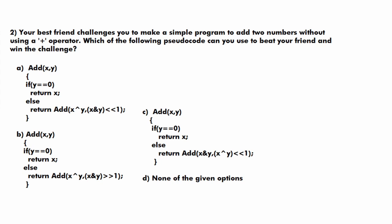Moving to the second question: your best friend challenges you to make a simple program to add two numbers without using a plus operator. Which of the following pseudocode can be used to beat your friend and win the challenge? You are given four options and must identify which function will add two numbers. We will take each function, run it for some input, and check whether its output is the correct addition of two numbers.